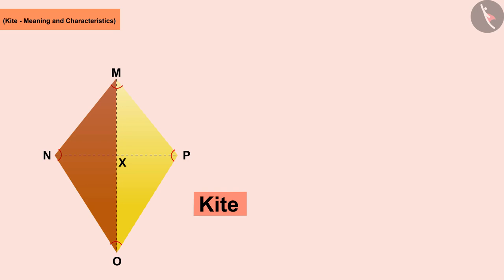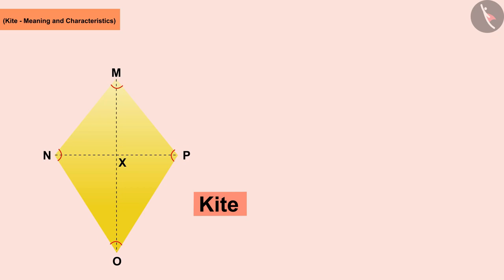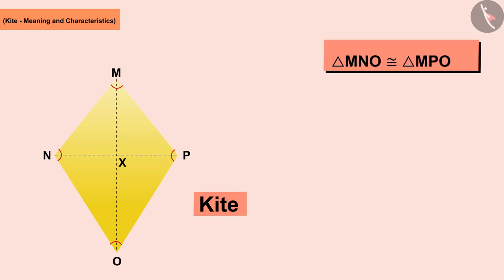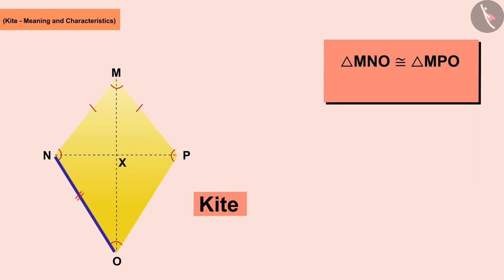If we talk about diagonal MO, you will see that MO divides this kite into two triangles: MNO and MPO. We can see that triangle MNO completely covers triangle MPO when the kite is folded relative to diagonal MO. Consequently, we can say that the two triangles are mutually congruent — that is, the corresponding parts of both triangles will be of equal measure. The corresponding sides MN and MP, and the sides ON and OP, are equal.